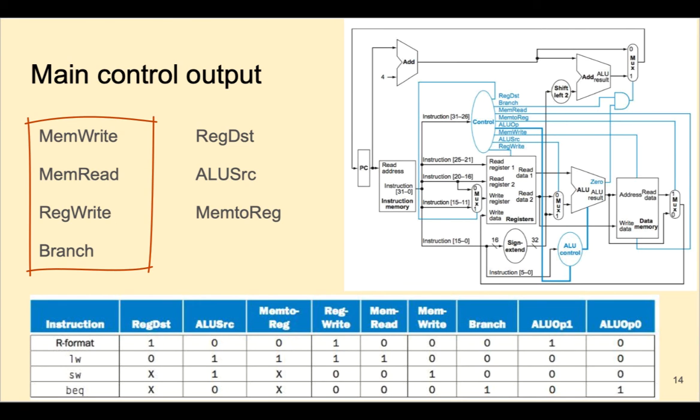The control signals here you can figure out by just asking yourself true-false questions. Does this instruction have permission to write to memory? Does it have permission to read from memory? Does it write to the register file?